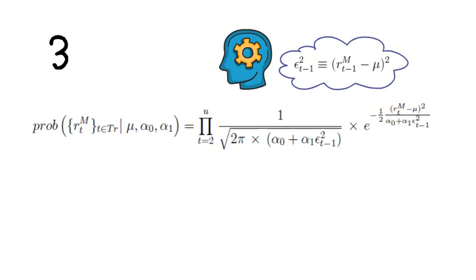...1 divided by the square root of 2π times (α₀ + α₁ε²_(T-1)) times the exponential of minus half times (R_T^M - μ)² divided by (α₀ + α₁ε²_(T-1)).